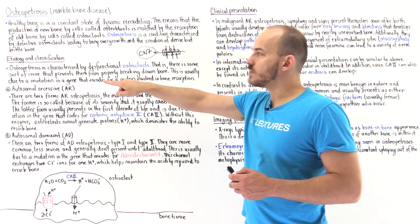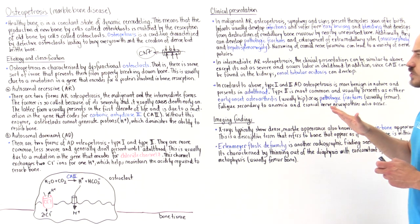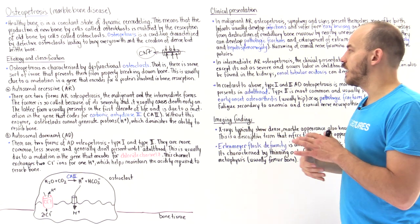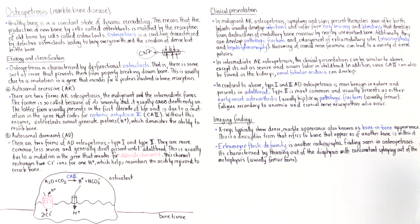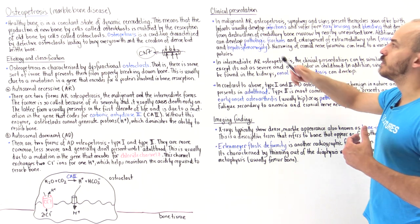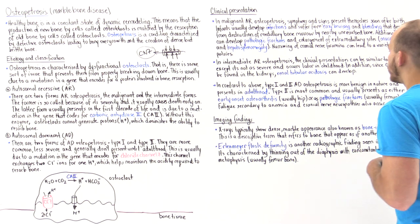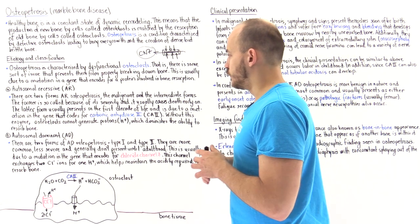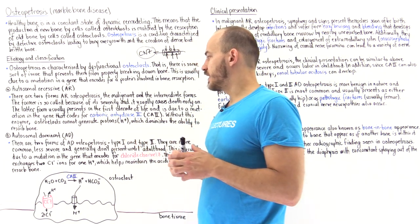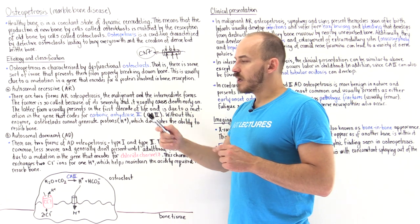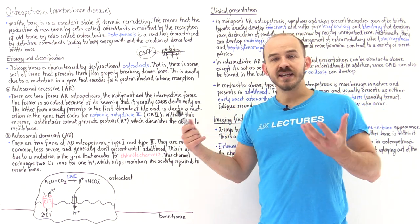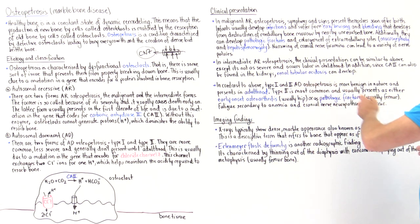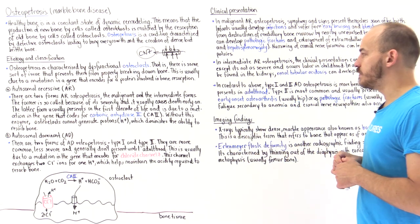The intermediate autosomal recessive form is less severe and presents later on, typically sometime in the first decade of life. Because in this form we have a problem in carbonic anhydrase 2, and this enzyme is also found in the kidneys, the kidneys are not going to be able to do their job effectively. That can cause something known as renal tubular acidosis, which we'll discuss more later.